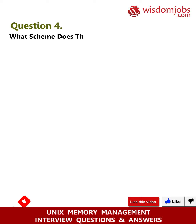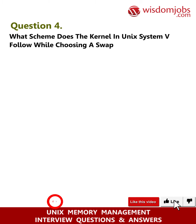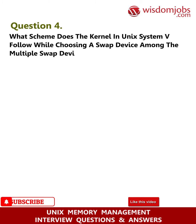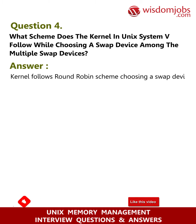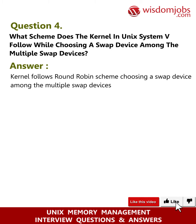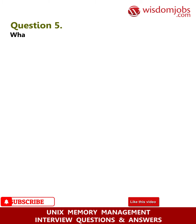Question 4: What scheme does the kernel in Unix System V follow while choosing a swap device among multiple swap devices? Answer: The kernel follows a round-robin scheme when choosing a swap device among the multiple swap devices in Unix System V.